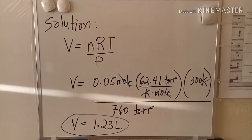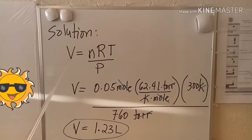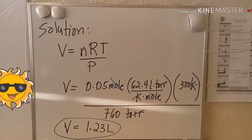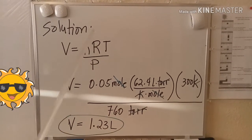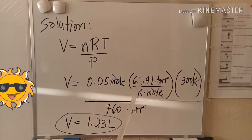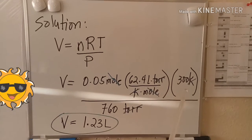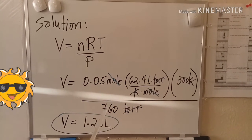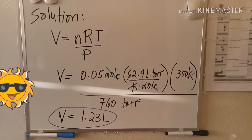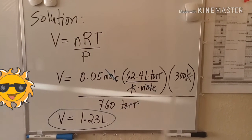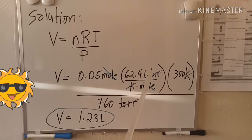Alright, so this time we're going to plug in the given from the derived formula of volume, which is V equals nRT over P. So, n equals 0.05 mole, R equals 62.4 L·torr over K·mole, temperature equals 300 Kelvin, and pressure equals 760 torr. Now, we can cancel mole and mole, Kelvin and Kelvin, and torr and torr. So, the remaining unit is liter, which is a unit of volume.